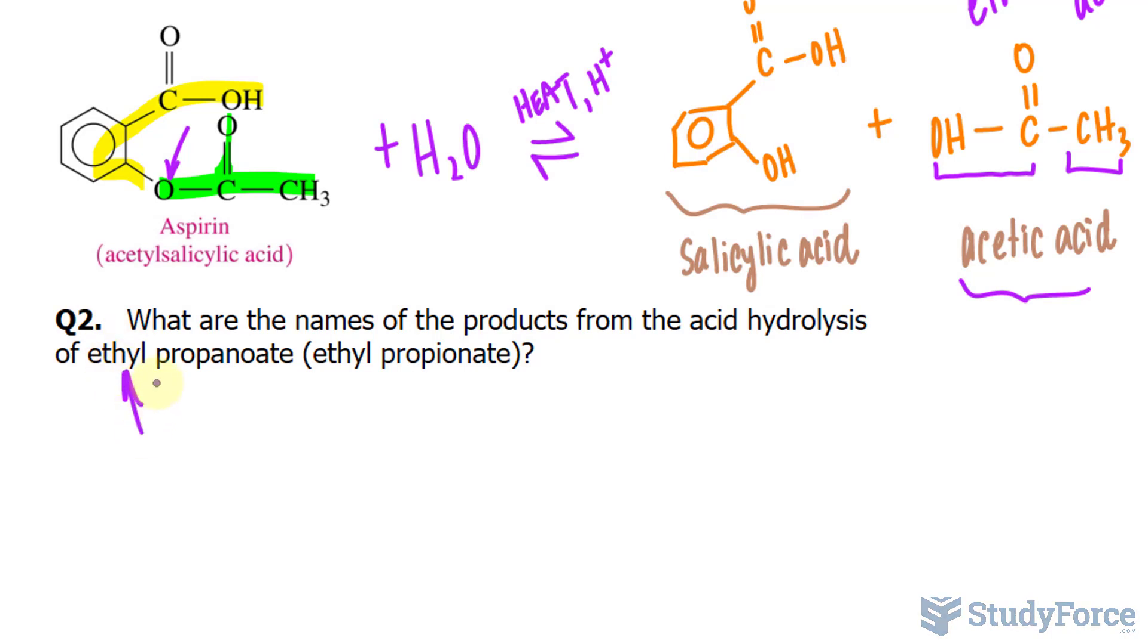We have the alkyl group right here. So ethyl is CH2, CH3. That's the alkyl group that is bonded to the oxygen. And the oxygen is bonded to the carboxylic acid part of the molecule, which is propionic acid, but in its ionic form, it's propanoate.